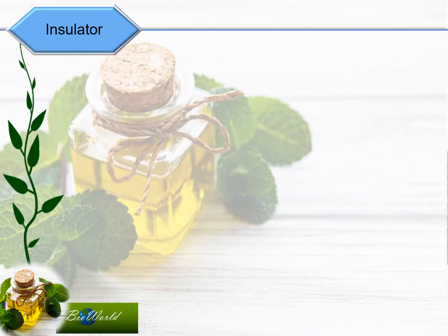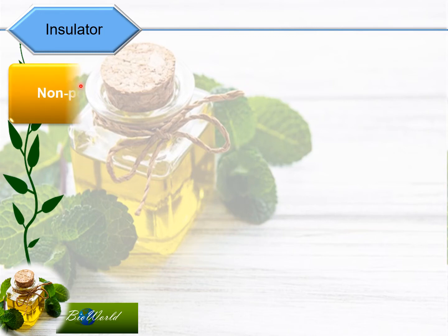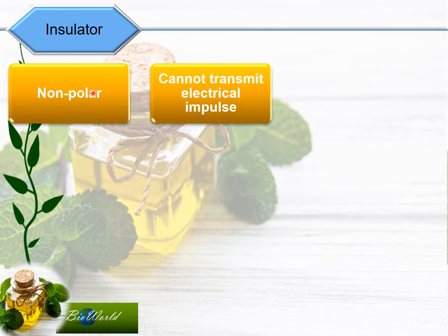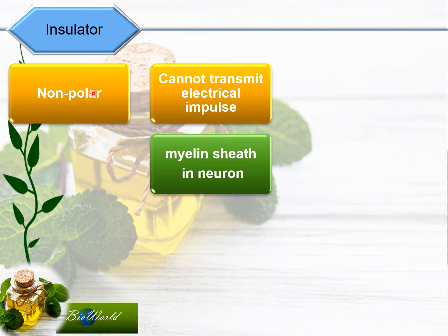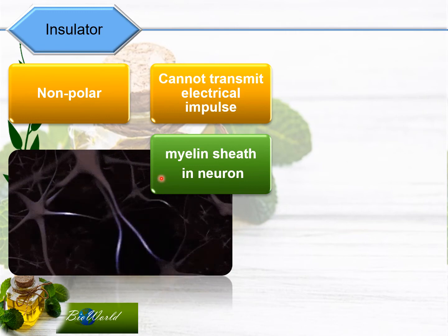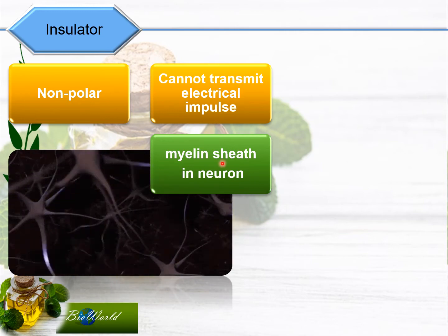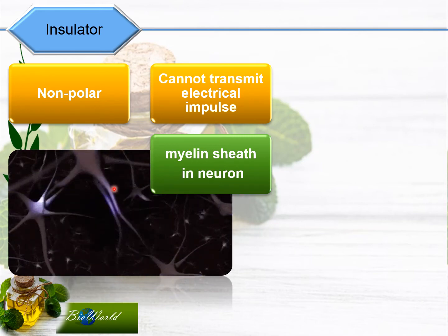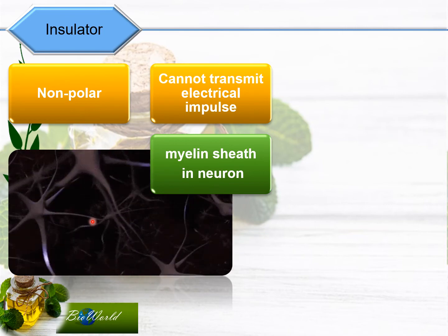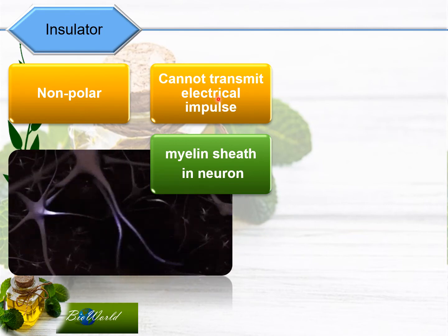We look next at triglycerides' role as an insulator. Water was a heat insulator because ice floats, but triglycerides are insulators because they are non-polar. Earlier we learned that if triglycerides are non-polar, they are biochemically inactive. Triglycerides are also inactive in transmitting electrical impulses, such as the impulses found in nerve cells. Nerve cells are covered by a layer called the myelin sheath which is made up of triglycerides. So when nerve cells transmit electrical impulses, the impulse does not jump from neuron to neuron because the myelin sheath is protecting the neurons — so you can see it is an electrical insulator.